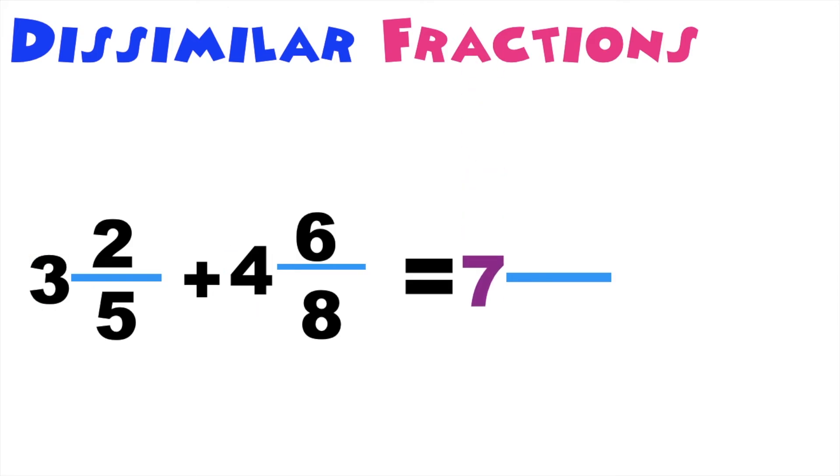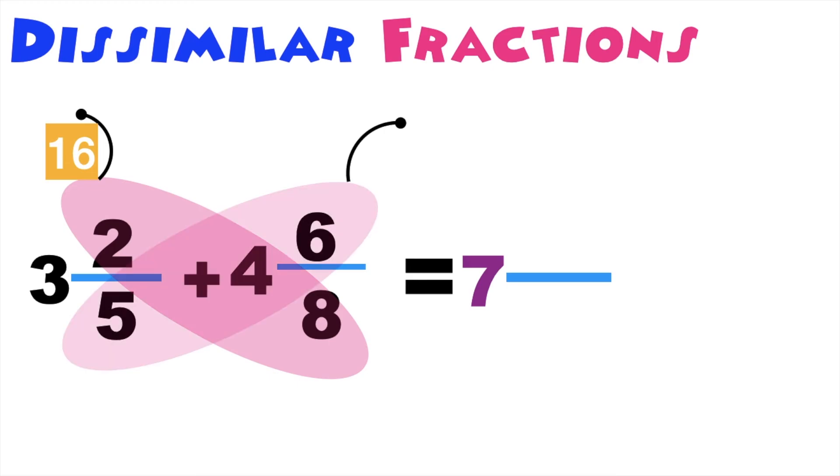Then let's use the butterfly method. 8 times 2 is equal to 16. Then 5 times 6 is equal to 30. Let's add 16 plus 30 is equal to? Very good, that's 46.